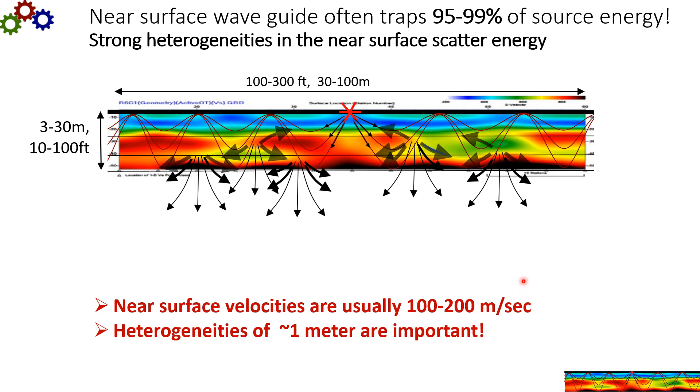It traps 95 to 99 percent of the source energy. But then the heterogeneities here, the small scale heterogeneities, will scatter a lot of the energy and they act as secondary sources. And heterogeneities on the order of 1 meter are important. And the near surface is very heterogeneous on this scale.